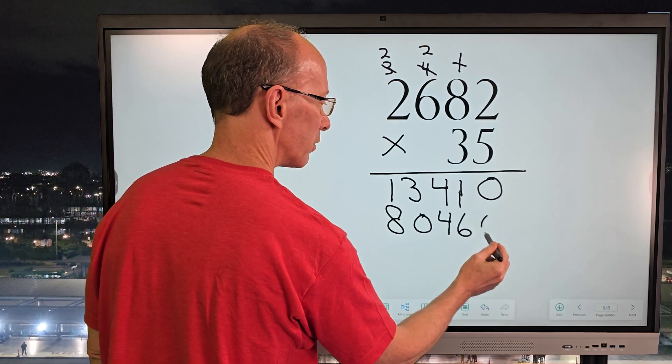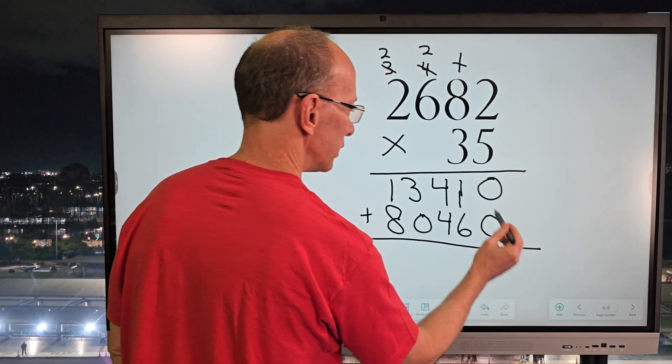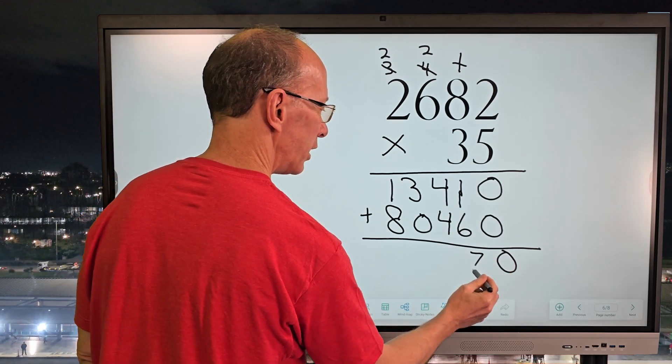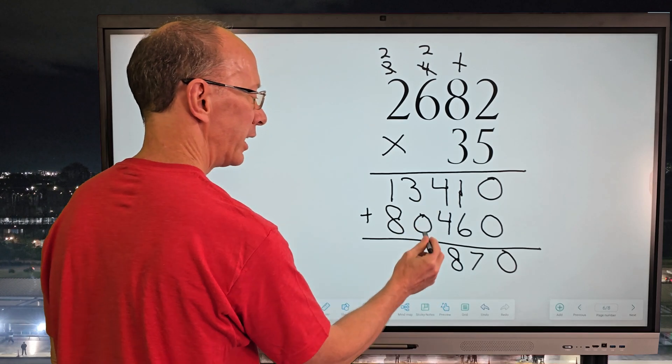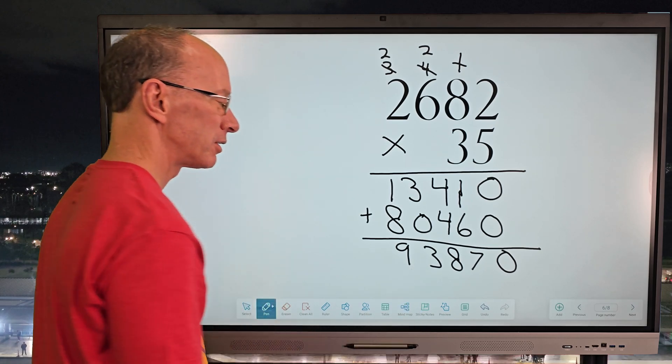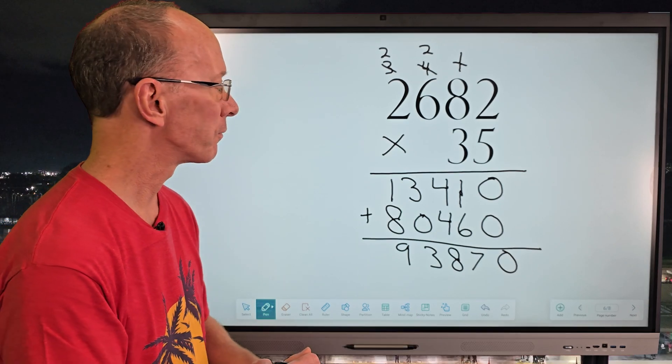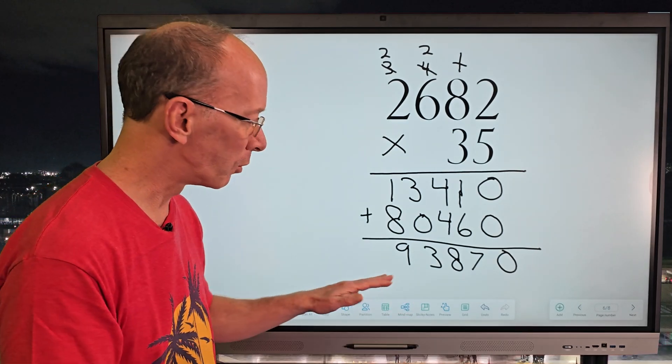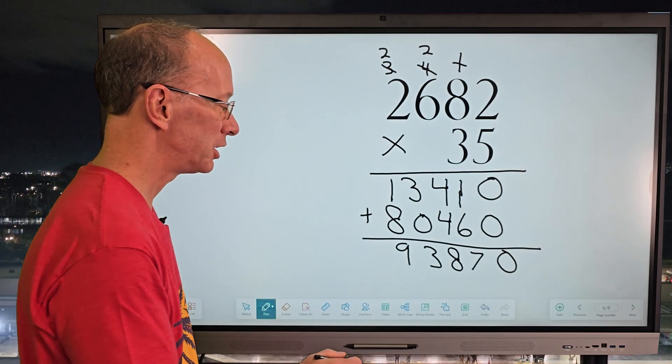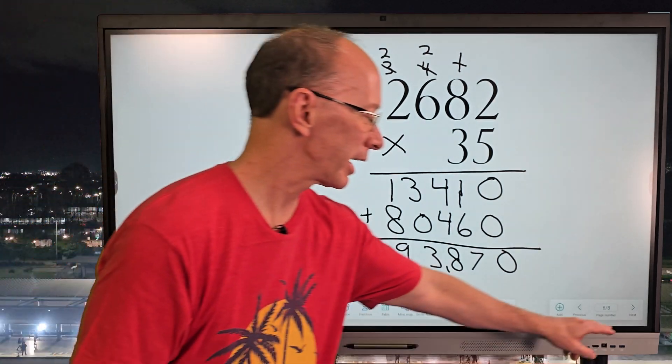So now I'm going to go ahead and put a 0 right here just for a placeholder and add these numbers. 0 plus 0 is 0. 1 plus 6 is 7. 4 plus 4 is 8. 3 and 0 is 3. And 8 plus 1 is 9. Now, some people will put the 0 here and some people don't. It's totally up to you. We're more concerned on getting the right answer, but there's always different ways on how to achieve that answer. I'm going to go ahead and put a comma right there. Let's go ahead and take a look at our next frame.